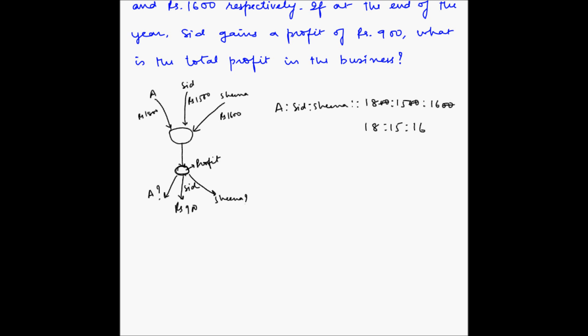Sid and Sheena. So what this means is that if we add these three numbers up, so 18 plus 16 is 34 plus 15 is 49. So if we made 49 equal parts of this total profit, then out of those 49 equal parts, 18 parts go to Anu, 15 parts go to Sid and 16 parts go to Sheena.